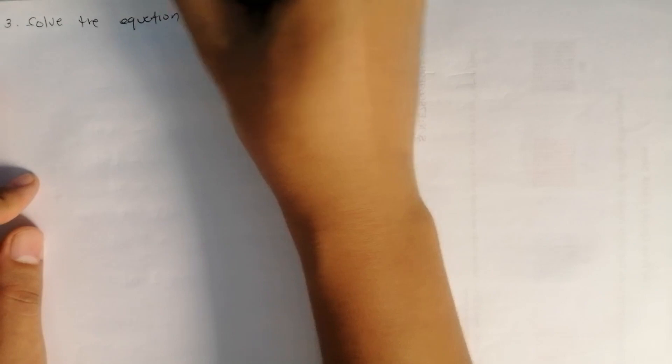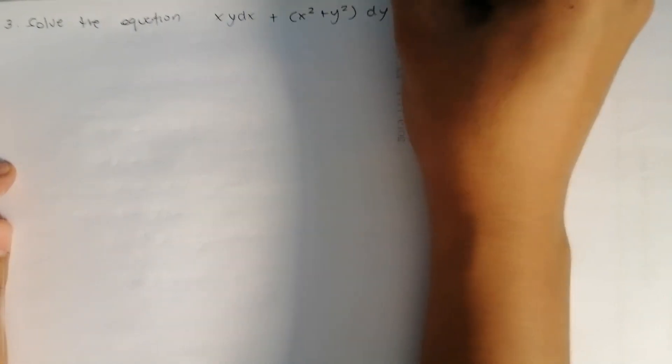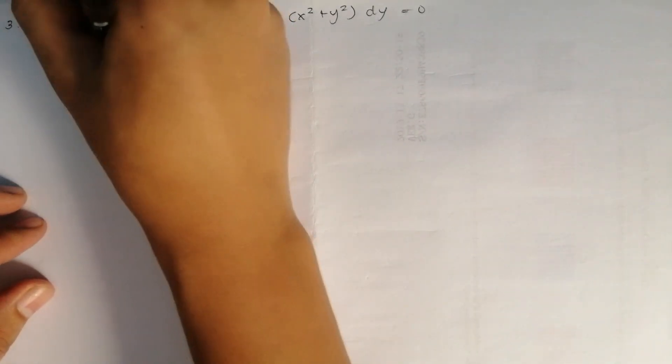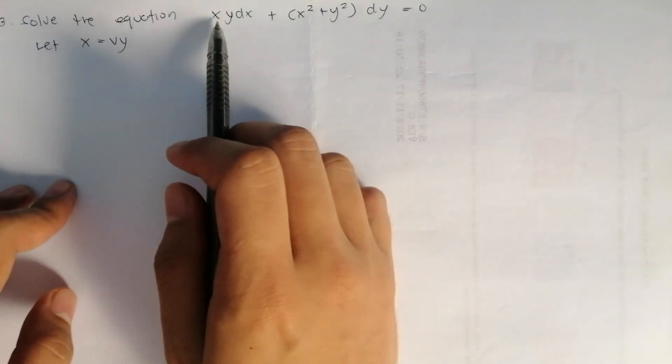For the last example, number 3: solve the equation xy dx plus (x² plus y²) dy equals 0. This time let x equals vy, because x appears less frequently in the equation.